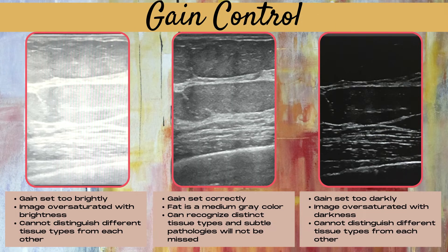Now let's look at some ultrasound images for examples. Today we're using an ultrasound image of breast tissue. In the first image on the left-hand side, the gain control is set too brightly and the image is oversaturated with brightness, and you cannot distinguish different tissue types from each other.